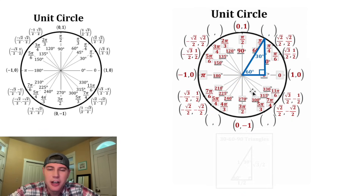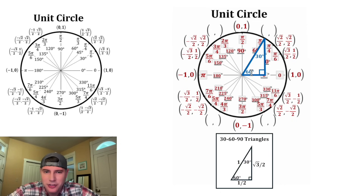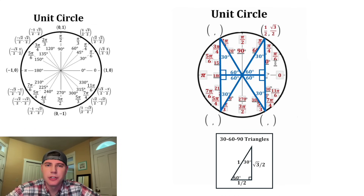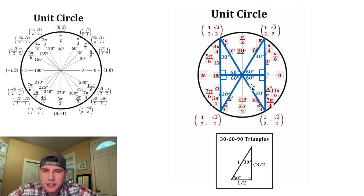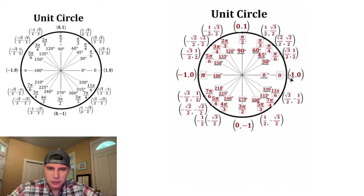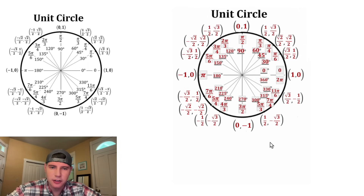These last four points are based on a 30-60-90 triangle with a reference angle of 60 degrees. The x here is 1/2 and the height is root 3 over 2. The x-values for all four points are 1/2 — some negative, some positive — and the y-values are all root 3 over 2, some negative and some positive. And that's our unit circle all filled out. Let's also add a spot for 360 degrees and 2 pi radians. This is a good-looking unit circle — that's everything you should need!